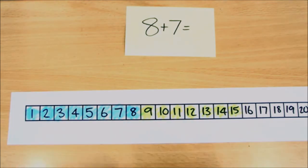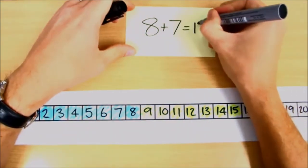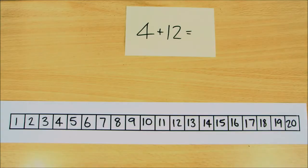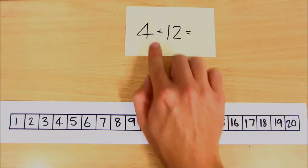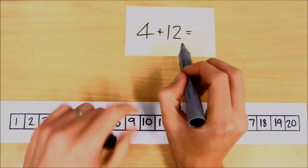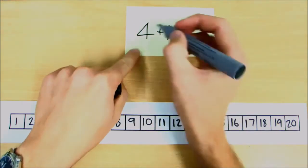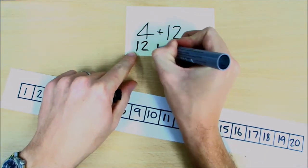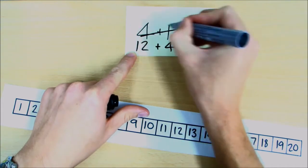Okay, let's have a look at another example. This time we're looking at the question four add twelve, or four plus twelve. By this point you know that I recommend swapping these around if the biggest number comes second, so we'll just swap that around to twelve add four, or twelve plus four if you like.